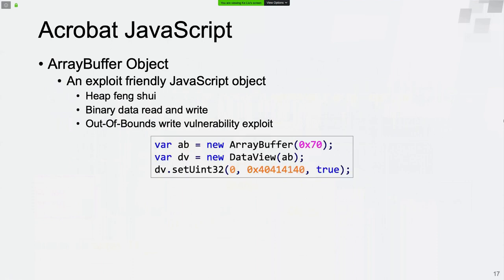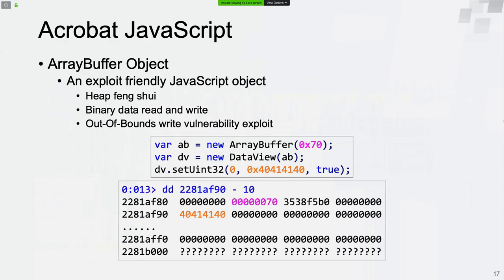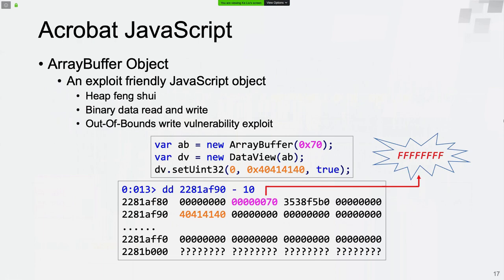We defined an ArrayBuffer object. The backing store will be allocated on system heap if the byte length is greater than 0x68. In this case, the byte length is 0x70 and the backing store was allocated on system heap. If we can overwrite the byte length value to 0x7FFFFFFF, then we can turn it into an arbitrary address read and write primitive and achieve code execution.